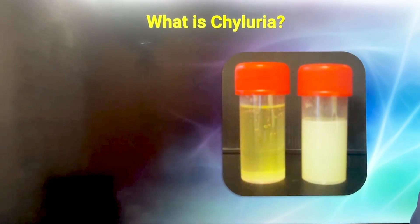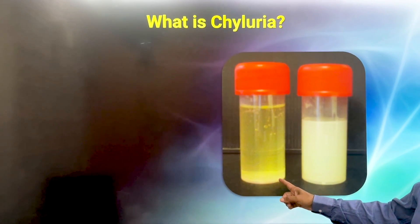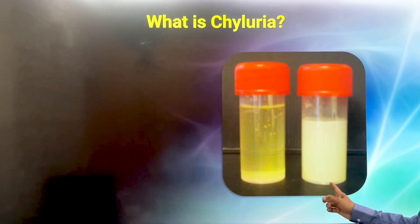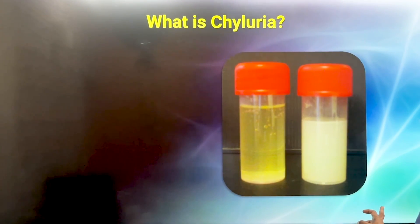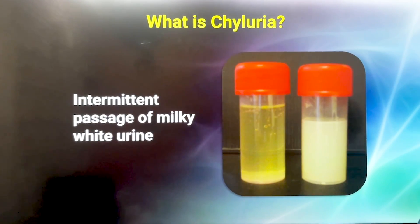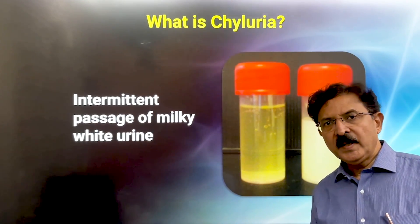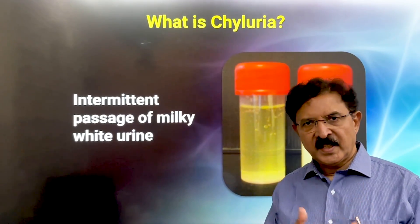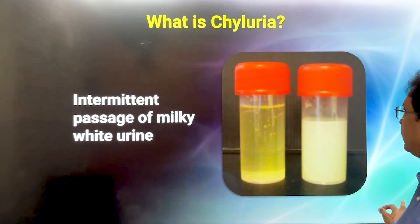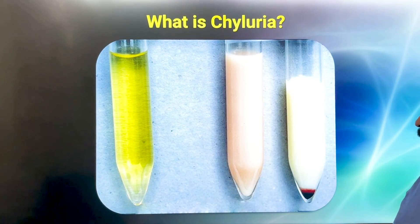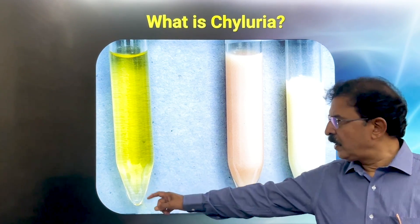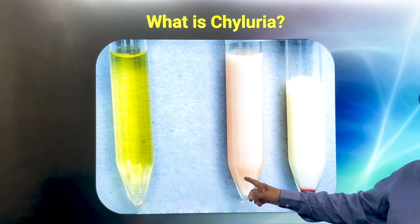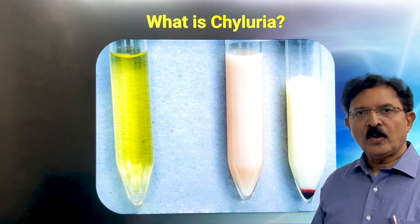What is chyluria? Normally a patient passes urine which is straw colored, but when a patient comes and tells you that my urine has become milky, then we call this condition chyluria. In chyluria, patients have various shades of milky white urine, and that happens intermittently over the day and over the week. Some patients have a mix of blood, and this is called hematochyluria.